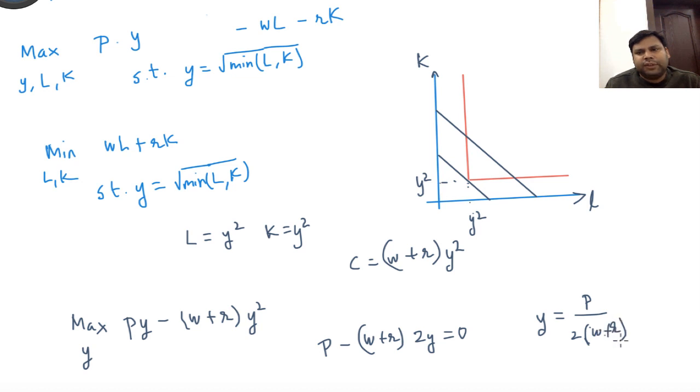If you want to figure out the input demands, the input demand will then be L equals y squared. So square of this, L equals K equals P squared divided by 4(w plus r) squared.